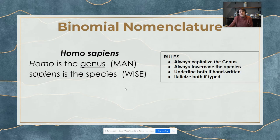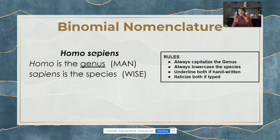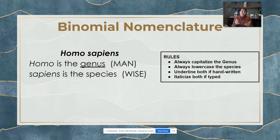There are a couple of rules to keep in mind. When writing Homo sapiens, the first word — the genus — is always capitalized, and the second word — the species — is always lowercase. If you're writing it, italicize these words so they're slanted. If you can't italicize, such as when handwriting, you would underline it to show that it is a scientific name. You've probably seen scientific names before, even in this class.